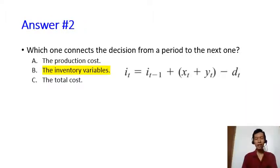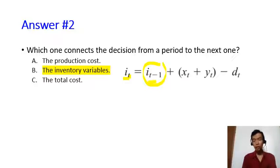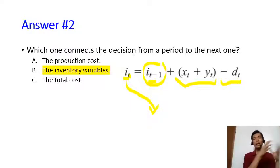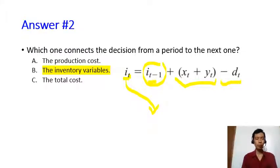The answer is true, because in the optimal solution i4 = 0, meaning Silco has no sailboats left at the end of period four. The second question asks which variable connects decisions from one period to the next. The answer is the inventory variables. Looking at the inventory equation, it contains the ending inventory of the previous period, plus production in the current period, minus demand — and this ending inventory becomes the beginning inventory of the next period, linking all decisions across the multi-period problem.